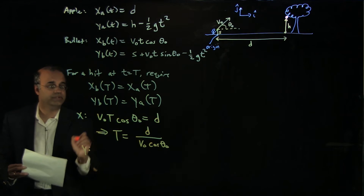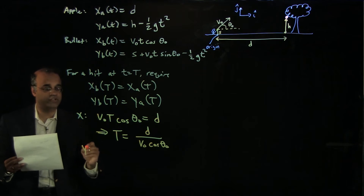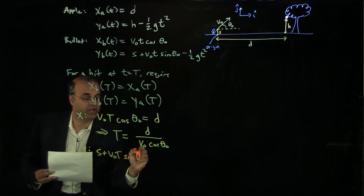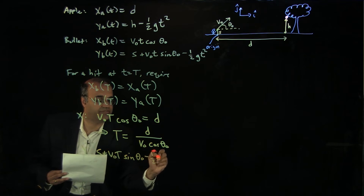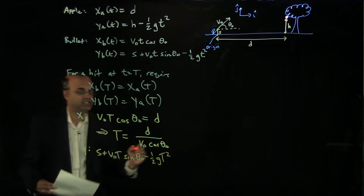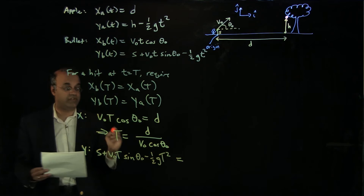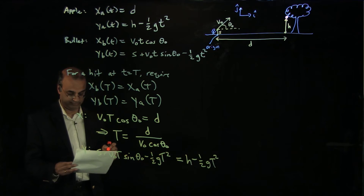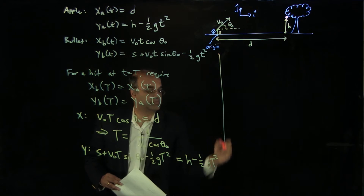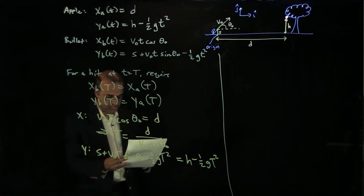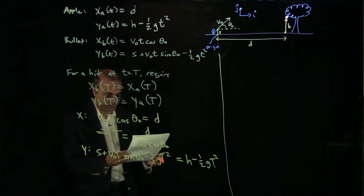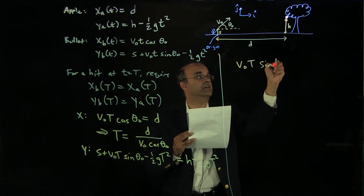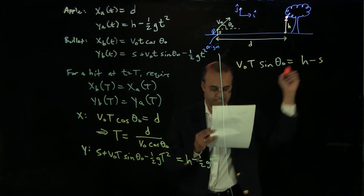For the y-coordinate, the bullet's position is s + v-naught·T·sin(θ₀) − ½gT², and the apple's position is h − ½gT². Notice that the −½gT² terms cancel on both sides, leaving v-naught·T·sin(θ₀) = h − s, and therefore sin(θ₀) = (h − s) / (v-naught·T).